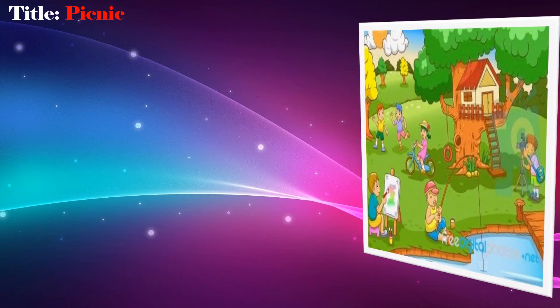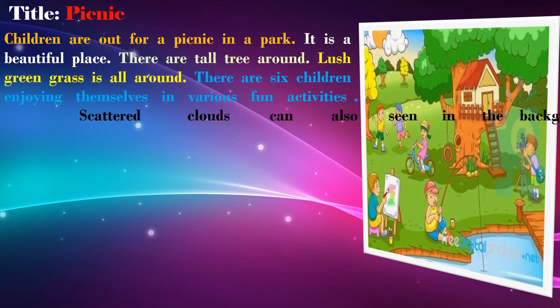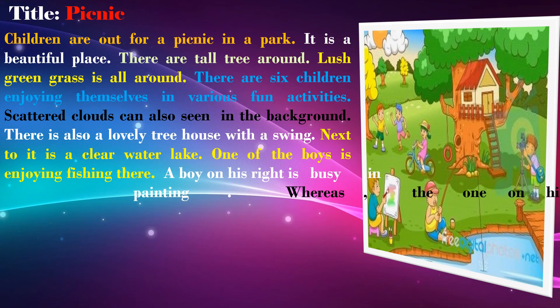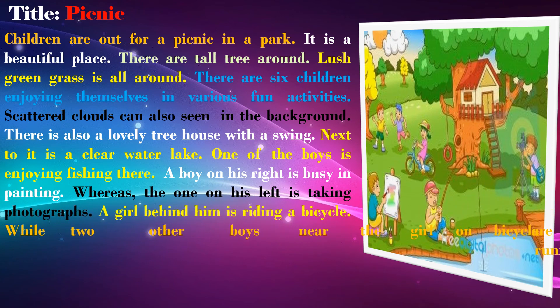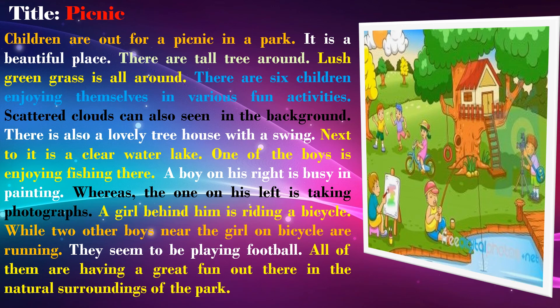Based on my observations, here is the composed picture description: Children are out for a picnic in the park. It is a beautiful place. There are tall trees around and lush green grass is all around. There are six children enjoying themselves in various fun activities. Scattered clouds can also be seen in the background. There is also a lovely tree house with a swing. Next to it is a clear water lake. One of the boys is enjoying fishing there. A boy on his right is busy painting, whereas the one on his left is taking photographs. A girl behind him is riding a bicycle, while two other boys near the girl on the bicycle are running and seem to be playing football.